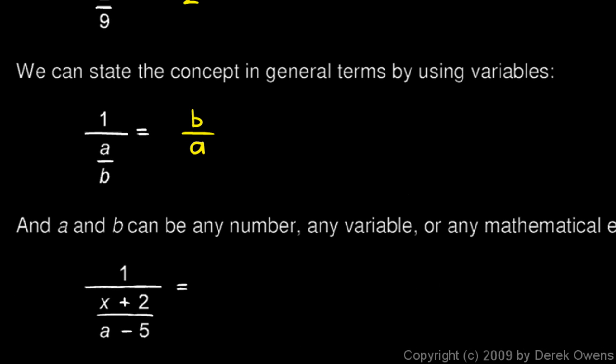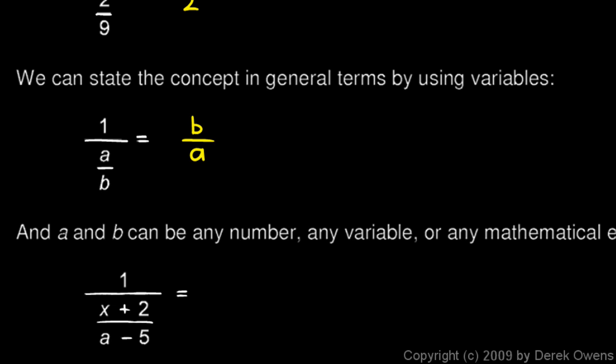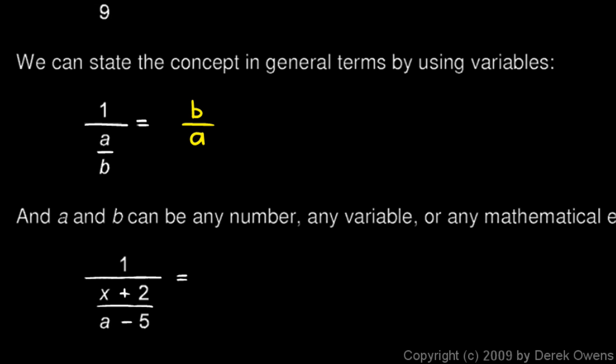So look at this: 1 over x plus 2 over a minus 5. I just take this fraction and flip it over, so this will equal a minus 5 over x plus 2.